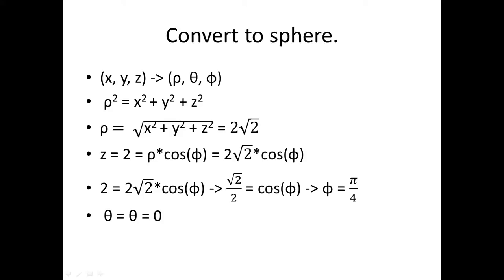Now we're going to go from X, Y, and Z to rho, theta, and phi. The first equation we're going to use is rho squared equals X squared plus Y squared plus Z squared. Taking the square root, rho equals the square root of X squared plus Y squared plus Z squared. Plugging in X=2 and Z=2, and Y=0, we get the square root of 4 plus 0 plus 4, which is the square root of 8, which simplifies to 2 root 2.